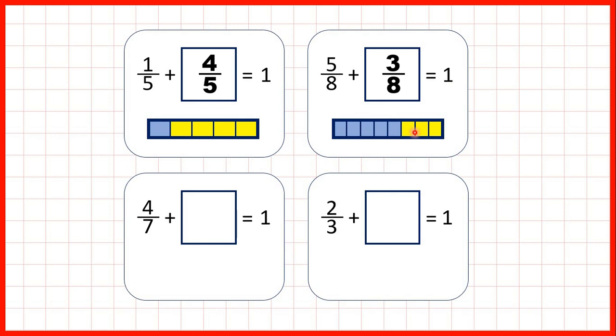You'll also spot 1 plus 4 is 5 and 5 plus 3 is 8. That's because if you add 1/5 and 4/5 you get 5/5 but that's the same as 1 and if you add 5/8 and 3/8 you get 8/8 and that's also the same as 1. So when the numerator and denominator are the same you have 1 whole.